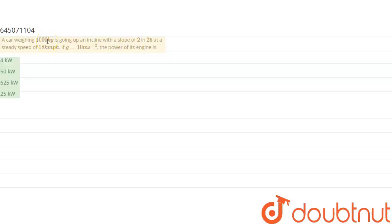1000 kg is going up an incline with a slope of 2 in 25 at steady speed. That means if this is a slope, right, your car